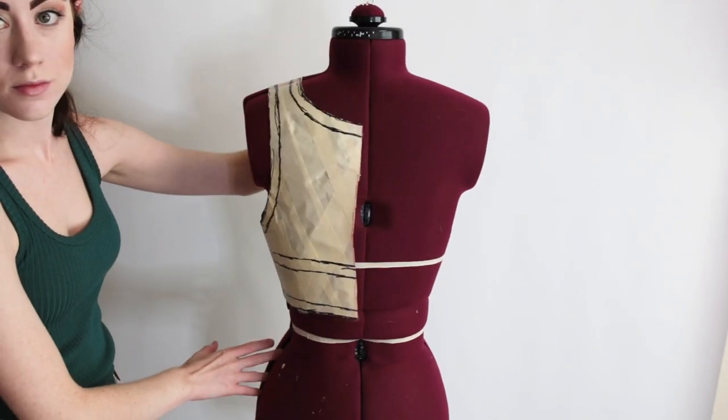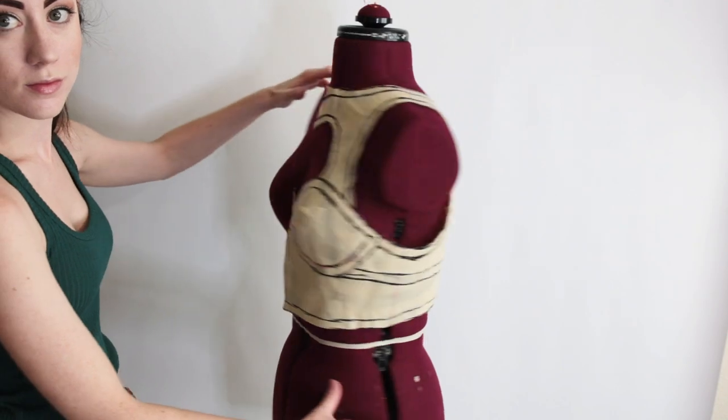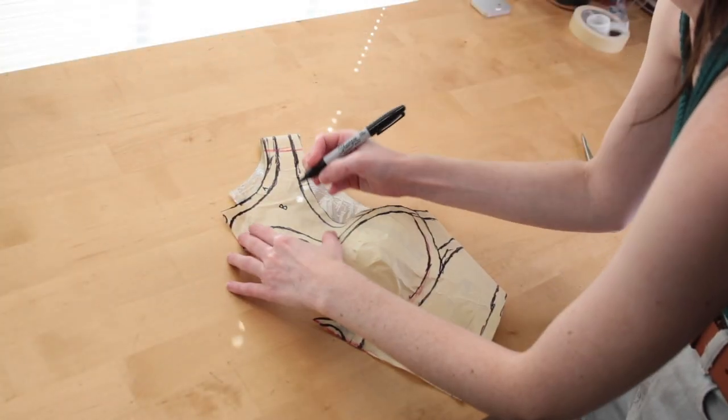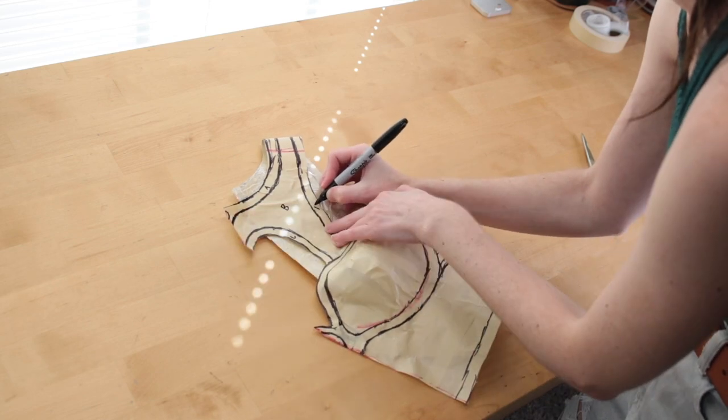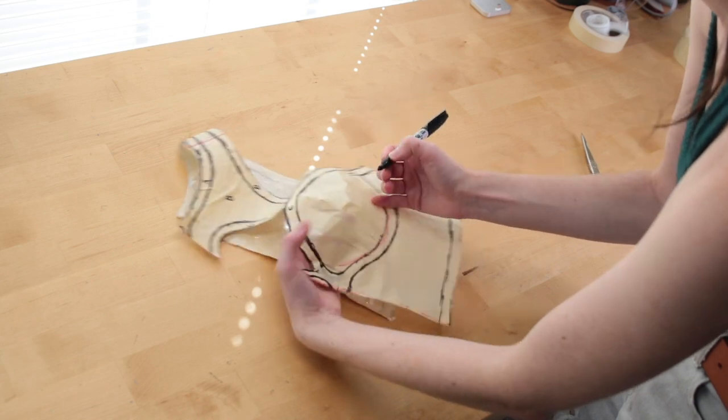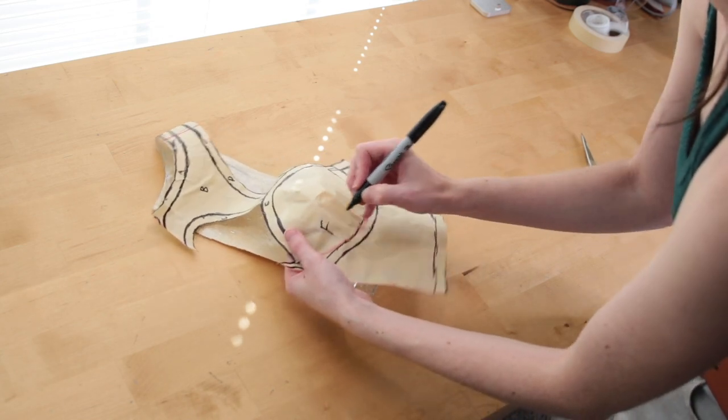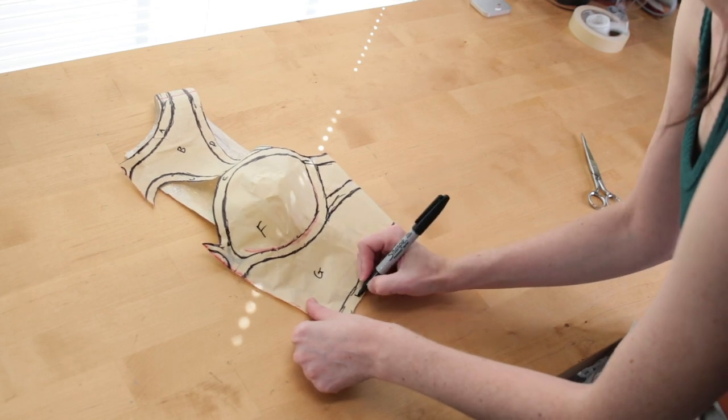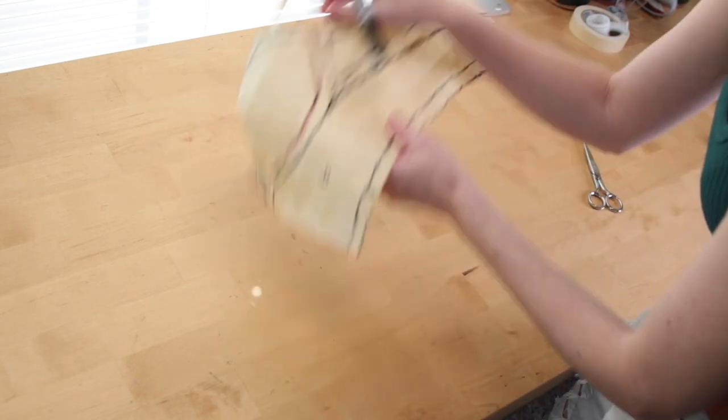Once you have your saran wrap masking tape pattern and it's all nice and pretty, I like to label each of the pieces A through B so that way I know which ones go where. I also highly recommend taking a picture of what this looks like before you cut it up so you know how to puzzle piece it back together afterwards.